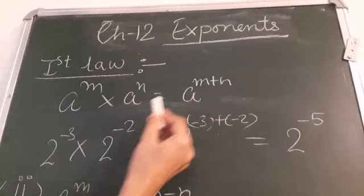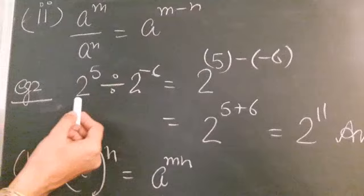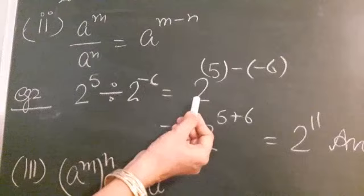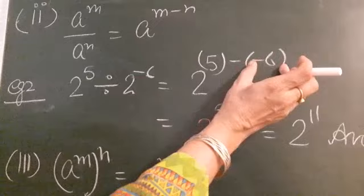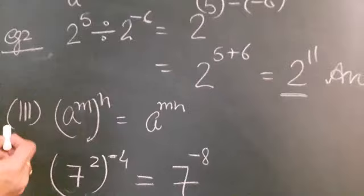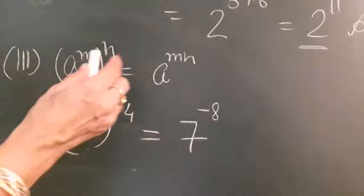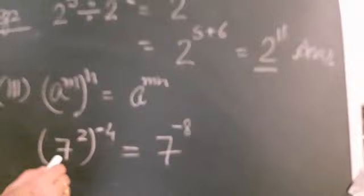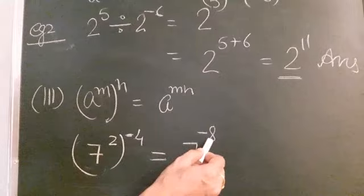The second law: a raised to power m divided by a raised to power n equals a raised to power m minus n. For example, 2 raised to power 5 divided by 2 raised to power minus 6: we subtract the powers, giving 5 minus (minus 6) equals 5 plus 6 equals 11. So the result is 2 raised to power 11. The third law: a raised to power m, again raised to power n, equals a raised to power m times n — we multiply both powers. For example, 7 raised to power 2 raised to power minus 4: the power becomes 2 times minus 4 equals minus 8, giving 7 raised to power minus 8.